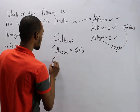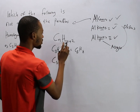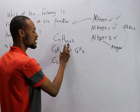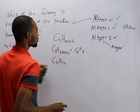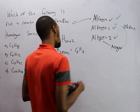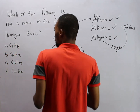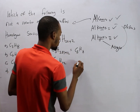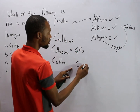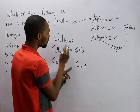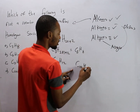The second option: if carbon is 5, we have C₅H₁₂ — that is 2×5+2=12 — so this is an alkane or paraffin. The third option: if carbon is 15, we have C₁₅H₃₂ — that is 15×2+2=32 — so this is also an alkane or paraffin.